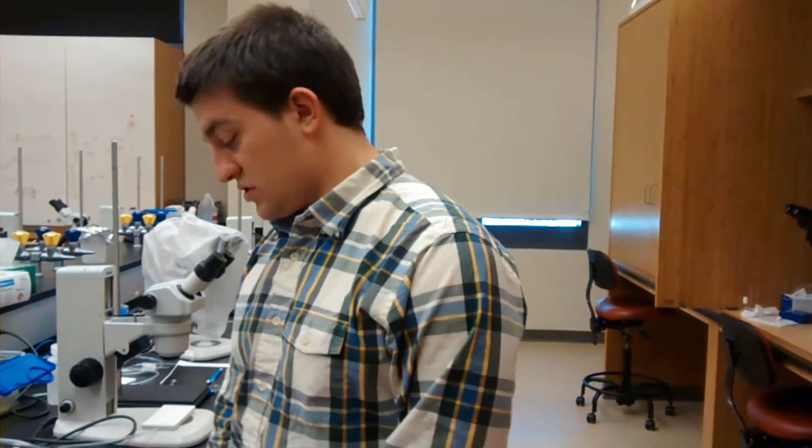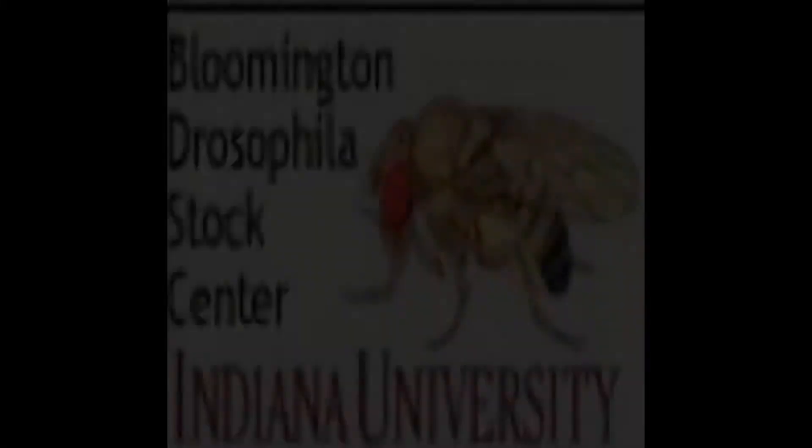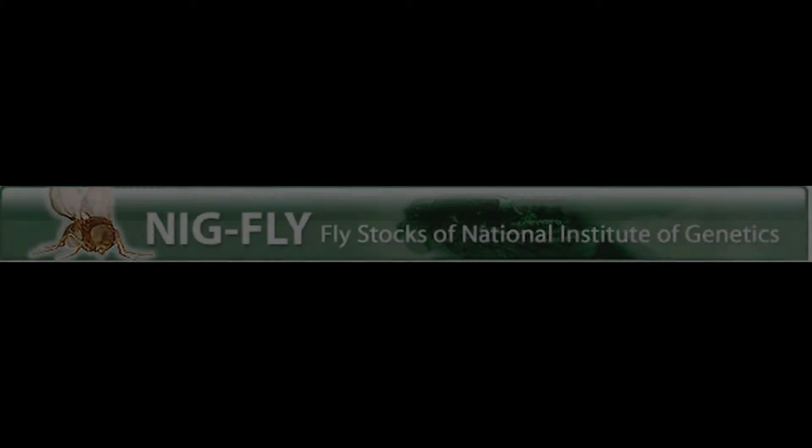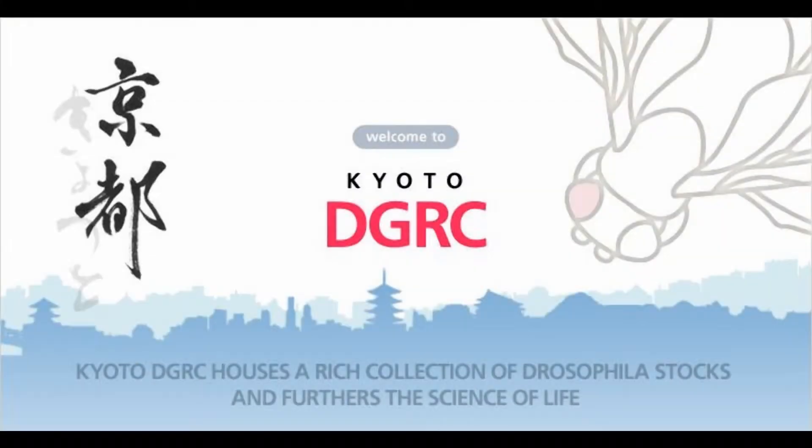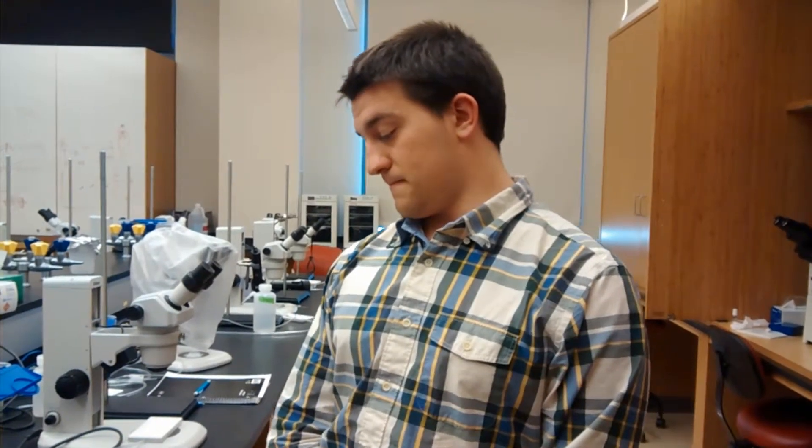There are a number of institutions which sell these, including the Bloomington Stock Center, the National Institute of Genetics, and Kyoto DGRC. These are all institutes which maintain stocks of Gal4 UAS GFP expressing transgenic flies.